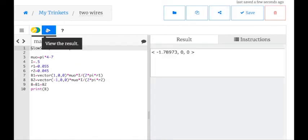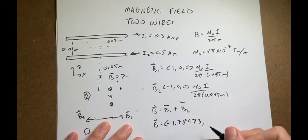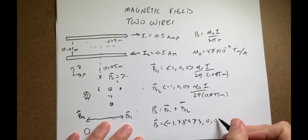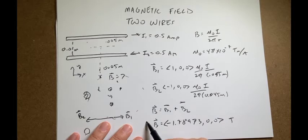And I get B equals negative, it's a vector, negative 1.78973. I don't know why I carried it out that far. 0, 0, Tesla. And that's my answer.